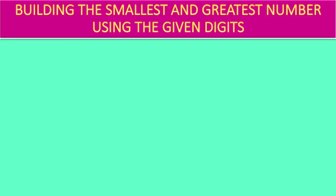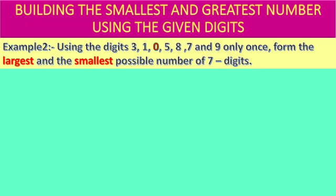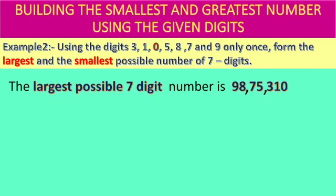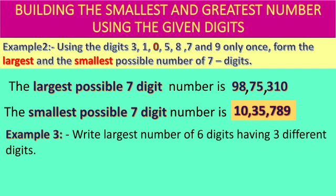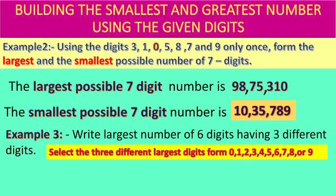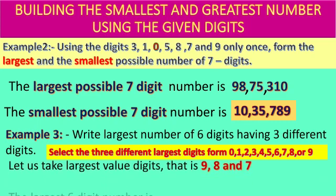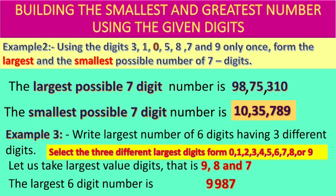In the second example, one of the digits is 0 among the given 7 digits. To form the largest possible number, arrange the digits from bigger to smaller. The number is 98,75,310. To form the smallest possible number, arrange the digits from smaller to bigger. However, we cannot begin a number with 0 as this will give us a 6-digit number. Exchange the places of 0 and 1. Thus, the required number is 10,35,789. In the third example, we need to form the largest 6-digit number having 3 different digits. Select the 3 largest different digits from 0 to 9, arrange them in descending order, and repeat the greatest digit 3 more times. Therefore, the required number is 9,99,987.